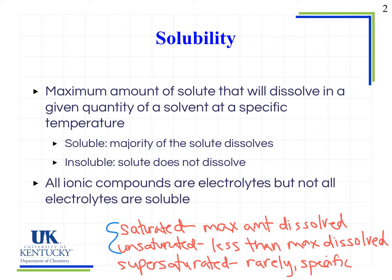We call something soluble when the majority of the solute dissolves. There are substances for which a very small amount won't dissolve, but the majority does, so we describe that as soluble. We're going to classify things as either soluble or insoluble. When we have an insoluble compound, we have a solute that does not dissolve — a very small amount might, but the majority does not.